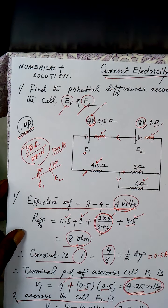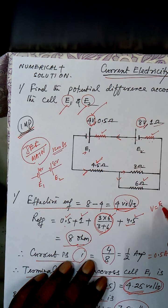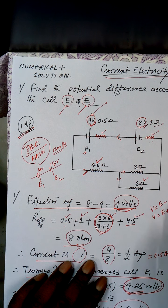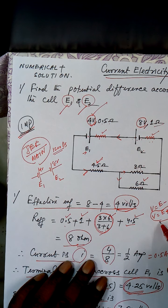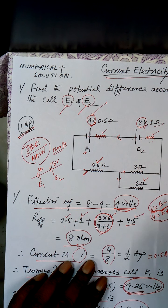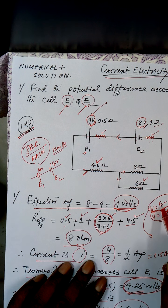For cell E2, from which current is being drawn, the terminal potential difference V2 = 8 − (0.5 × 1) = 7.5V. As previously explained, the formula V = E − Ir applies when current is drawn from a cell, meaning terminal voltage is less than the EMF.